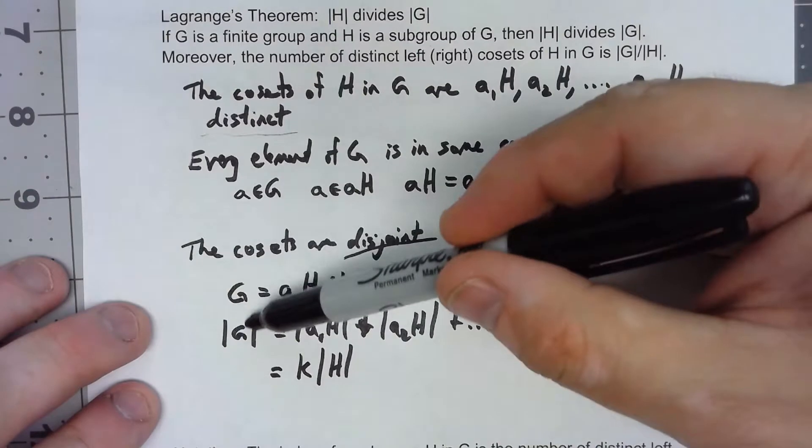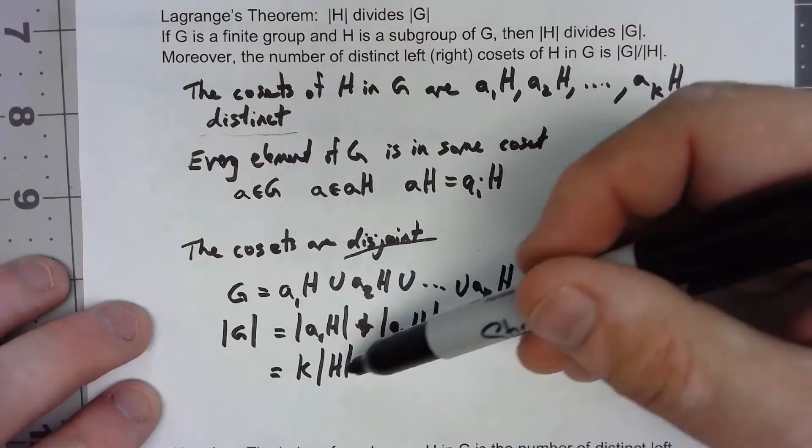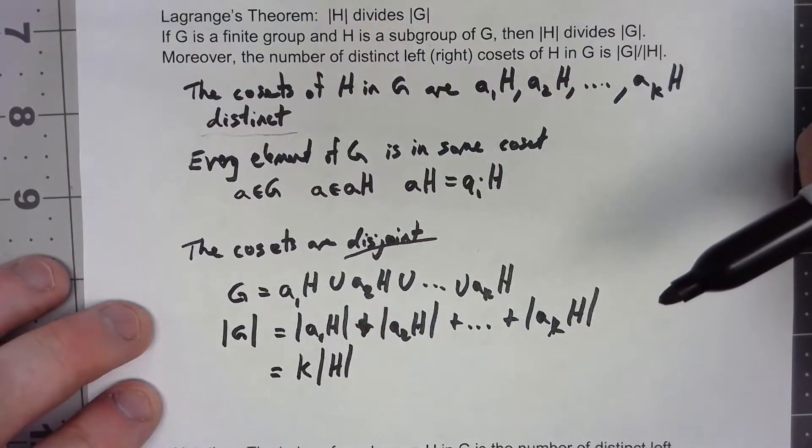So the number of elements in G is a multiple of the number of elements of H, or the number of elements of H divides the number of elements of G.